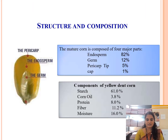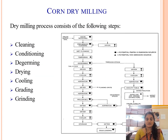In the first slide, I can see the structure and composition of corn. The corn has three major parts: the pericarp, the endosperm, and the germ. The four major parts are the endosperm, germ, pericarp, tip, and cap. The composition of yellow corn is: starch 61%, corn oil 3.8%, protein 8.0%, fiber 11.2%, and moisture 16%.